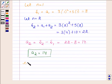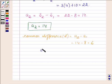Now let us find the common difference d, which is a₂ - a₁. So 14 - 8 = 6. Therefore, we have d = 6.